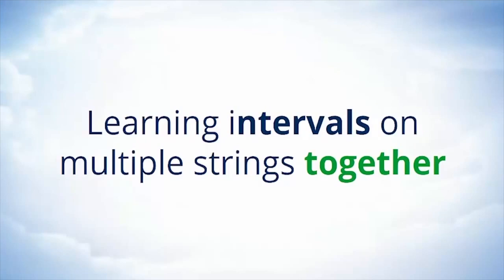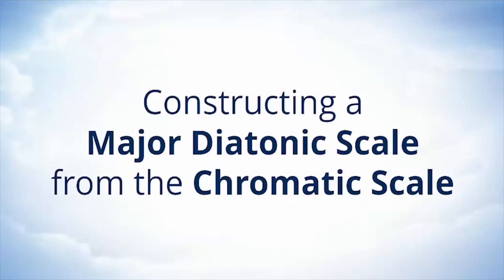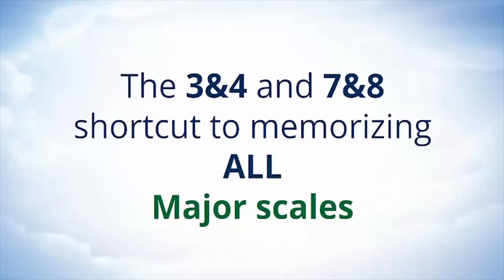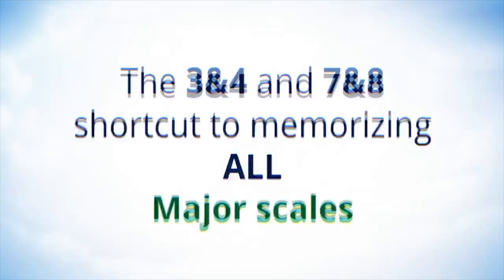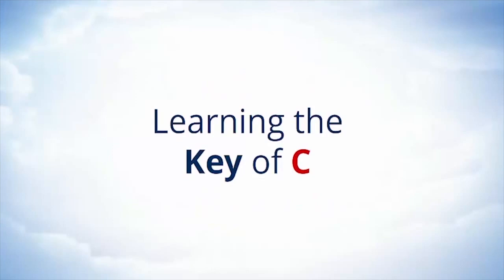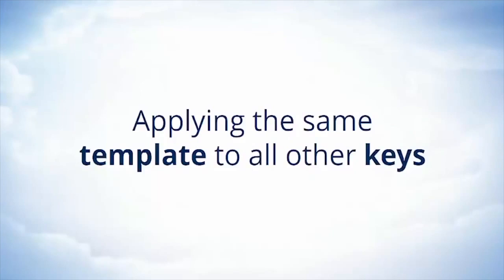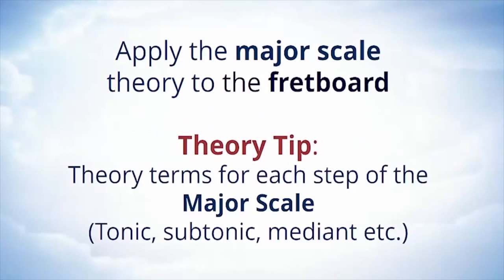In week three, we start the major scale theory. We're going to learn to construct a major diatonic scale from the chromatic scale, learn its half steps and whole step configuration, and learn that all major scales have half steps between the third and fourth and the seventh and eighth. We'll begin with the key of C to keep everything easy, then apply that same template to all twelve keys to learn about transposition, and apply the major scale theory directly to the fretboard.